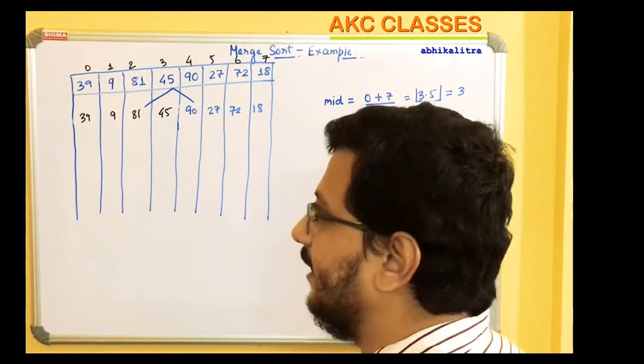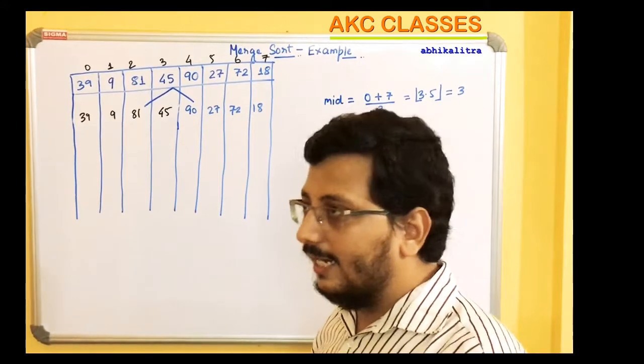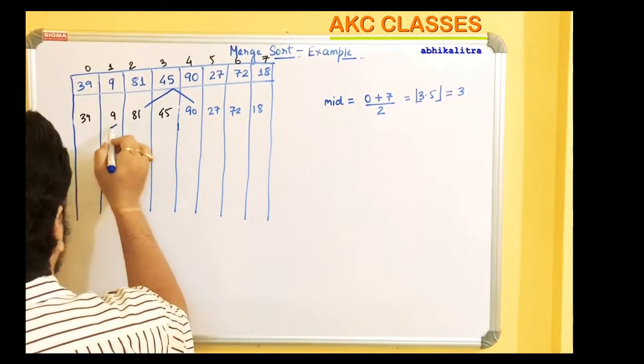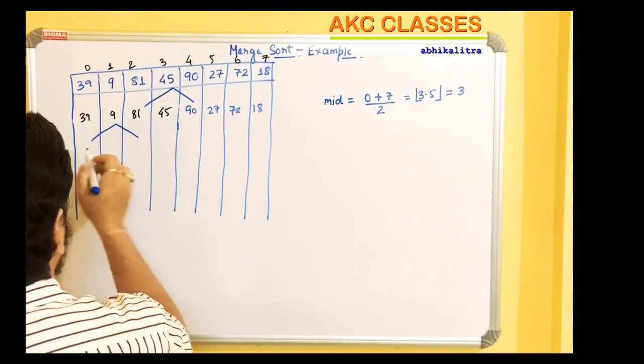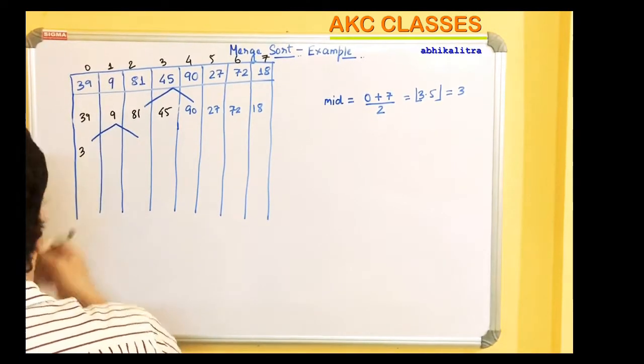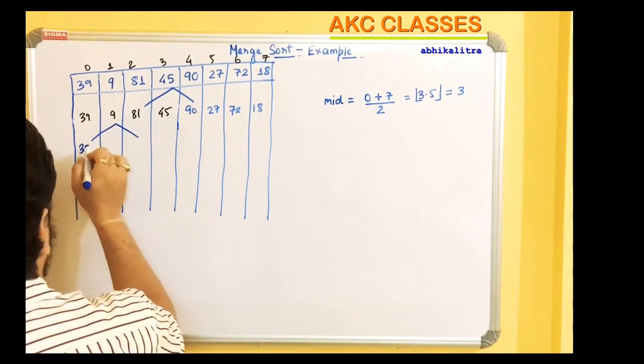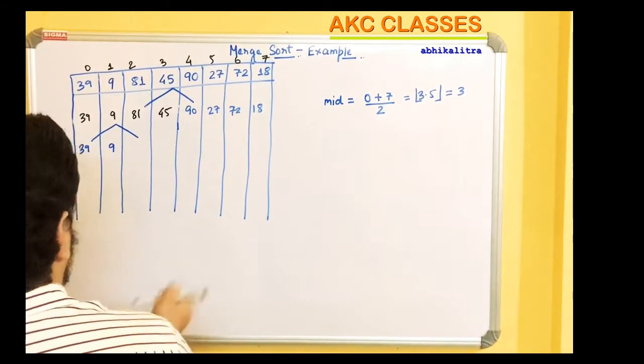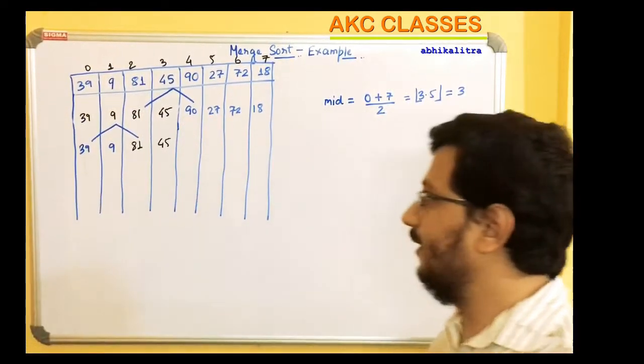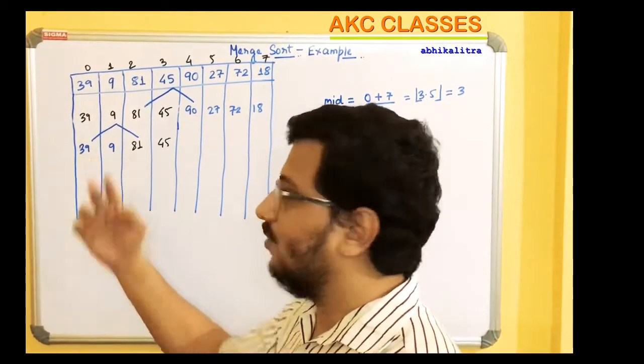The midpoint is basically 3 divided by 2, which is 1.5, so the middle value is 1. At 1 index we have classification. We have 39, 9 on one side and 81, 45 on the other. Next I will solve this problem.